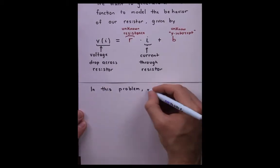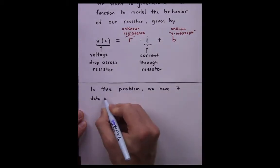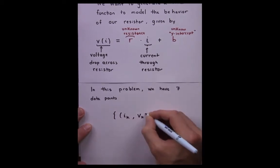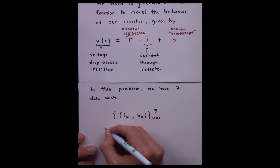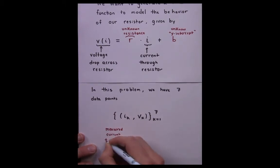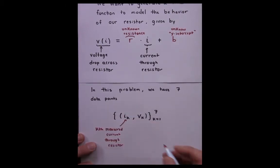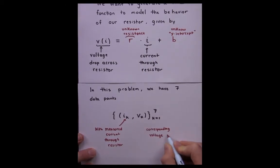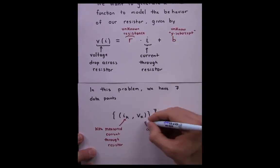In this problem, we have seven data points, each given as an ordered pair, I_k comma V_k, where I_k represents the measured current running through the resistor, and V_k represents the corresponding voltage drop across that resistor.